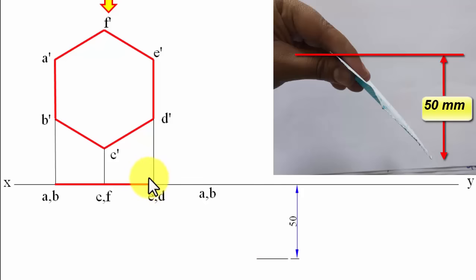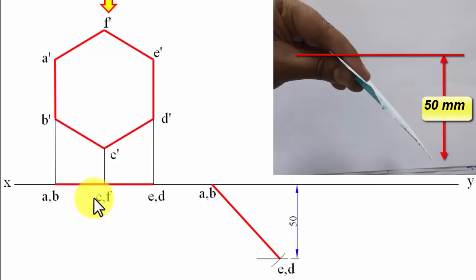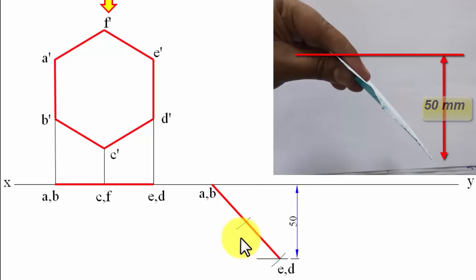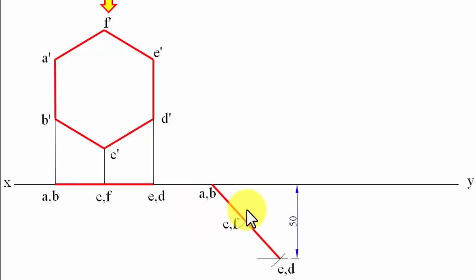Using a compass with center at AB, put an arc to locate point E,D at 50mm. Then with AB as center, put another arc to locate point C,F. If you place a protractor here, you can work out the surface inclination with the vertical plane, which comes out to 46 degrees.